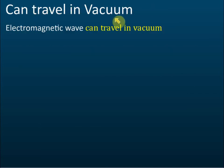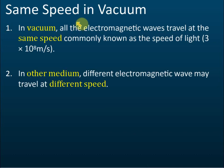Electromagnetic waves can travel in a vacuum. Unlike mechanical waves such as sound waves, which cannot travel in vacuum because they need a medium, electromagnetic waves don't need any medium — they can travel in vacuum.